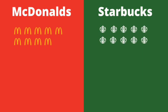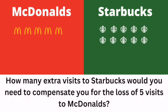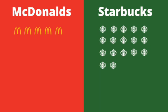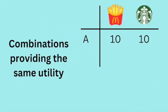Now imagine that we asked our consumer to give up five of their visits to McDonald's and ask them how many extra visits to Starbucks they would need to make to ensure their happiness or utility remained unchanged. If this is seven visits, then we can say our consumer is indifferent between either 10 visits to McDonald's and 10 to Starbucks, or 5 visits to McDonald's and 17 visits to Starbucks.